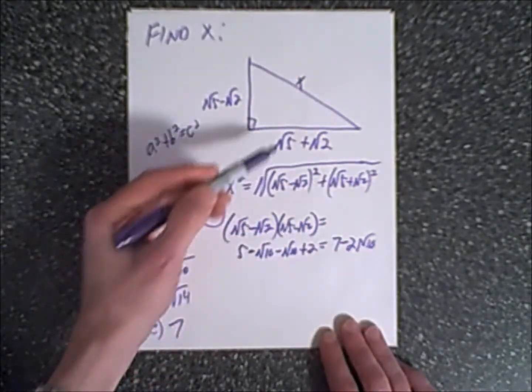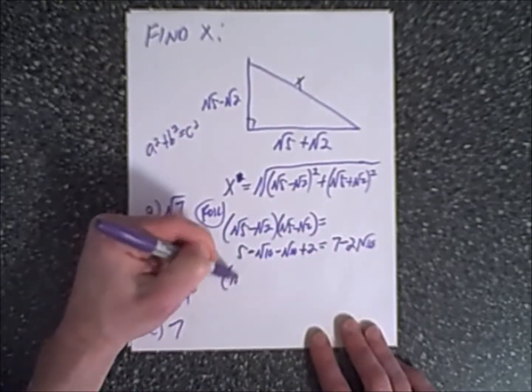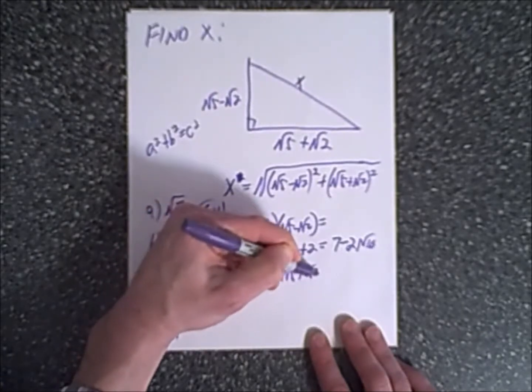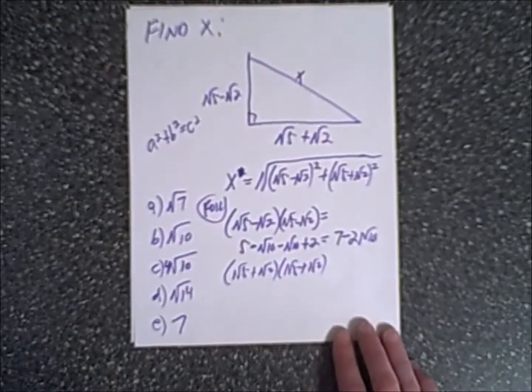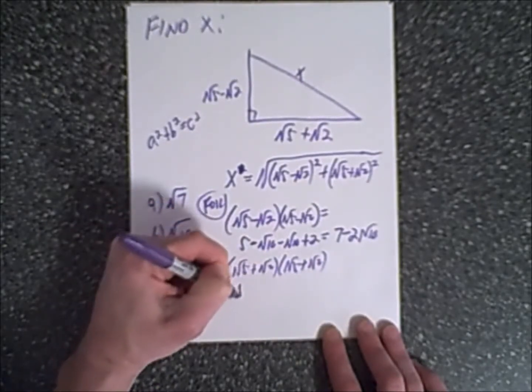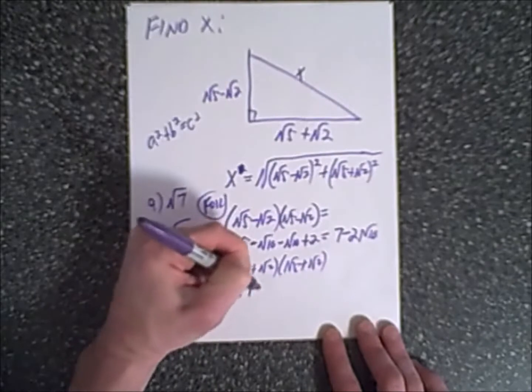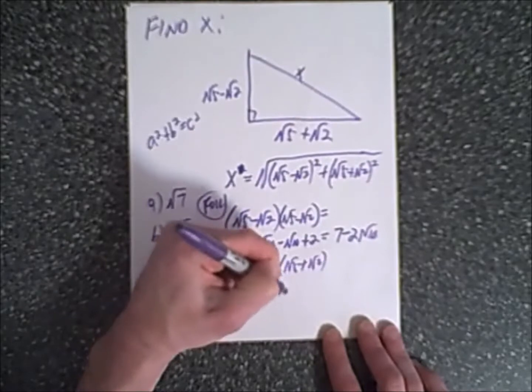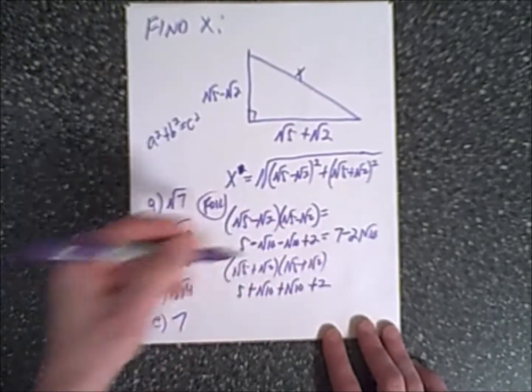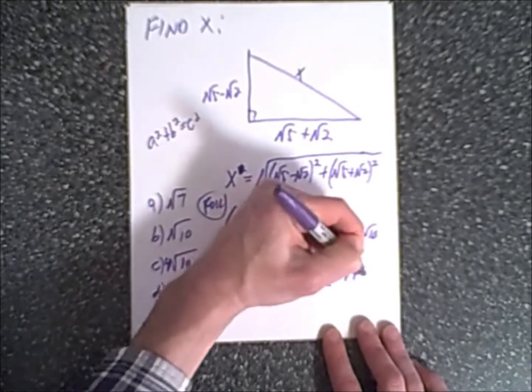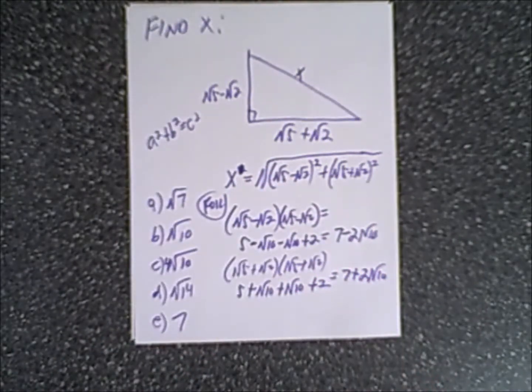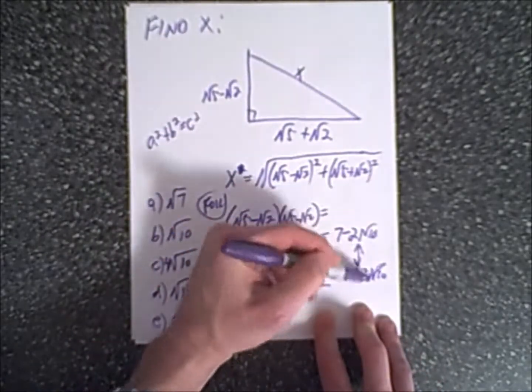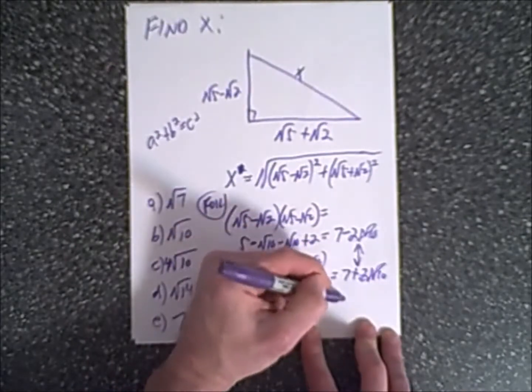We're going to do that for the second leg. We get square root of five plus square root of two times the square root of five plus square root of two. Again, we take this term and multiply it by itself. First is five. The outer is rad five times rad two is plus rad ten. The inner is rad two times rad five, which is plus rad ten. The last is plus two. This comes out to seven plus two rad ten, which is very nice and convenient because we're going to add these two terms together. When we do that, these cancel plus and minus, and we end up with fourteen.